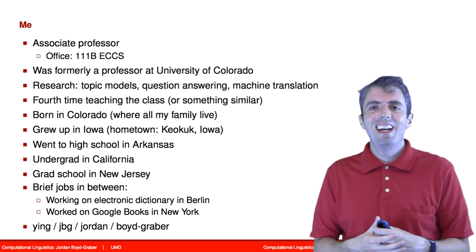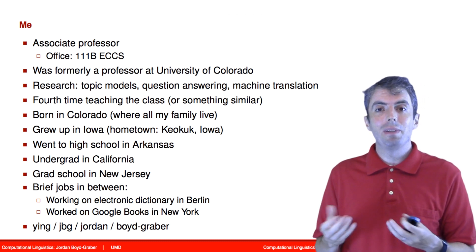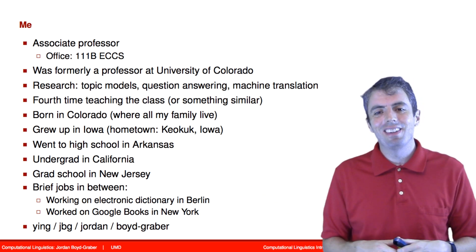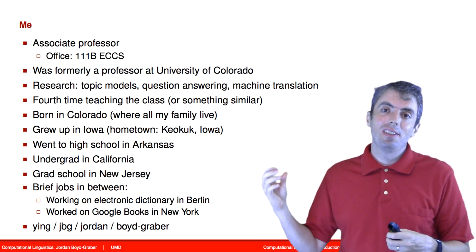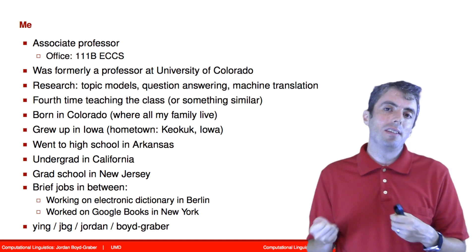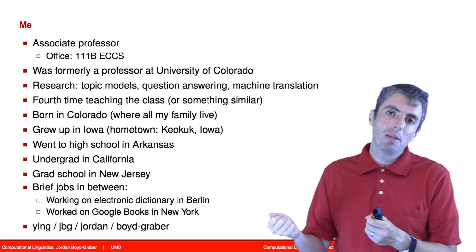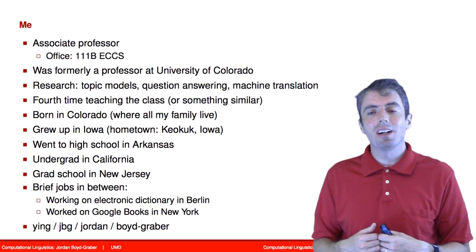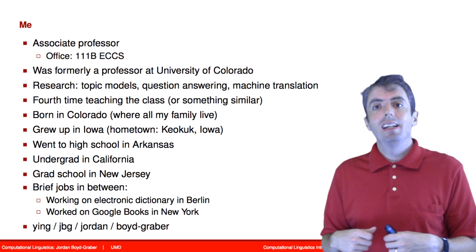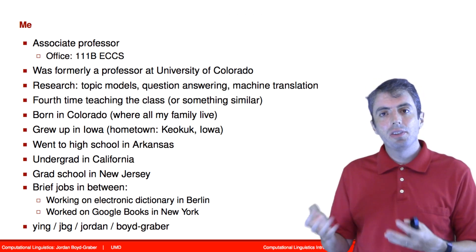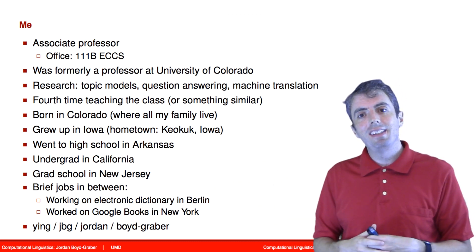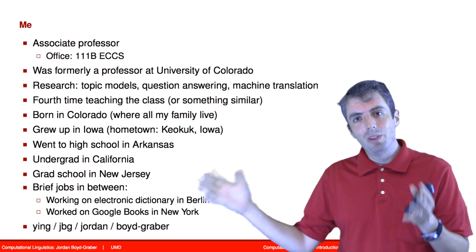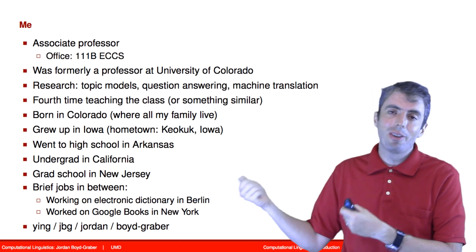Please be patient with me, especially as we go over the deep learning components of the course, as that will be the first time I've taught this specific content. Throughout the course, you'll get to know a little bit about the things that I research. In particular, my research is how humans and machines can interact with each other through language — a lot of machine learning, a lot of human-computer interaction, but all of it revolves around language. Some of the applications I work on are topic models, which you'll learn about early in the course. I also work on question answering, which will be the big project at the end of the course, and machine translation, which we'll touch on at the end.